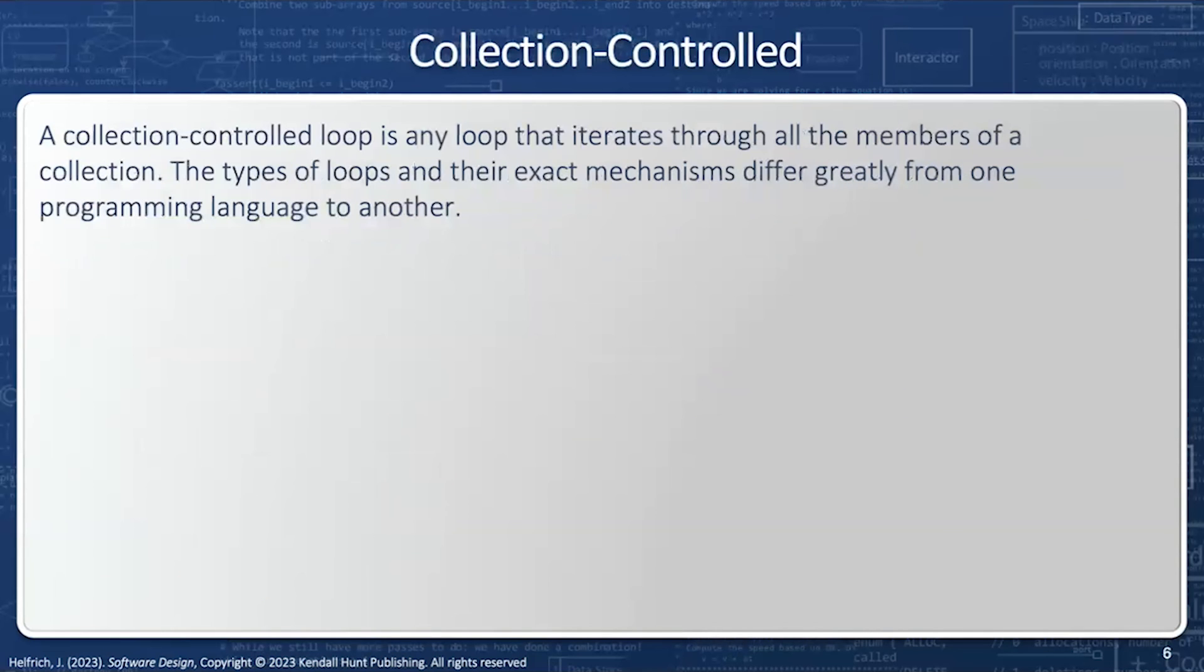The next is a collection control loop. This is any loop that iterates through all the members of a collection. The types of loops and their exact mechanism differ greatly from one programming language to the other. But there are five different types of collection control loops.